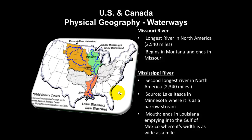Two major waterways in the United States: the Missouri River, located in the northern part of the country, is actually the longest river in North America. It begins in Montana and extends down to Missouri. The Mississippi River runs approximately 2,300 miles, starting in Minnesota and flowing south, passing near Gonzales and Baton Rouge here in Louisiana, and emptying out into the Gulf of Mexico.